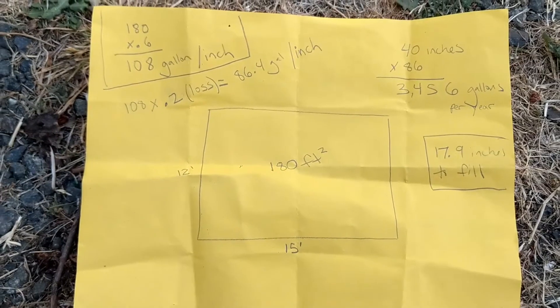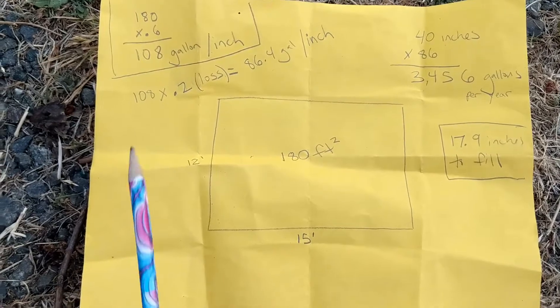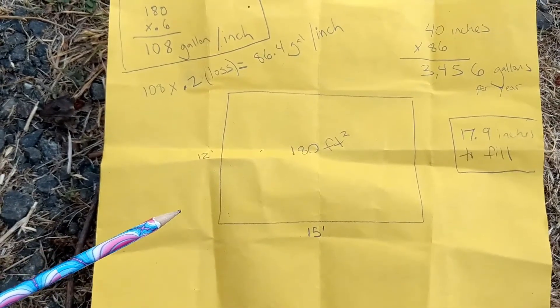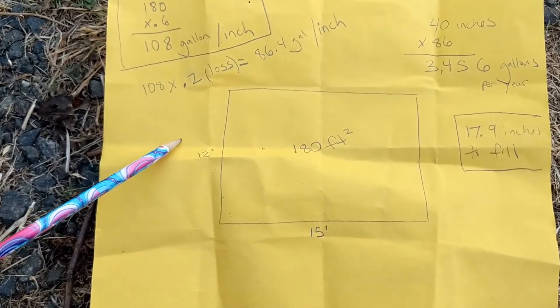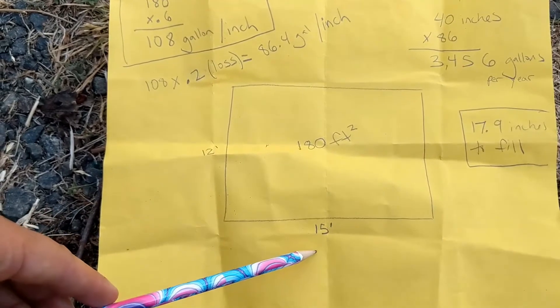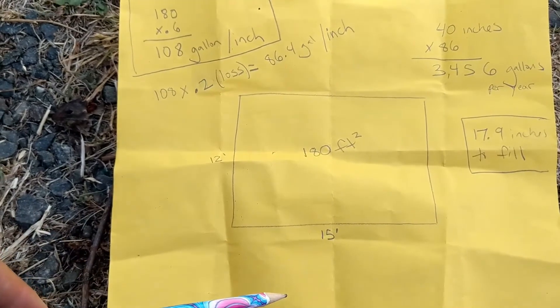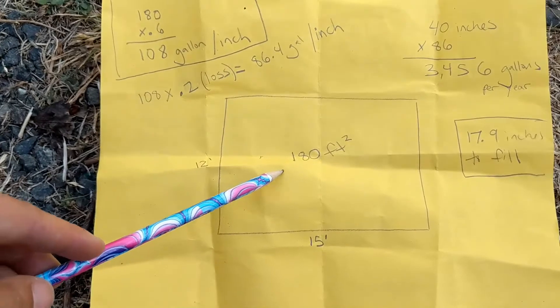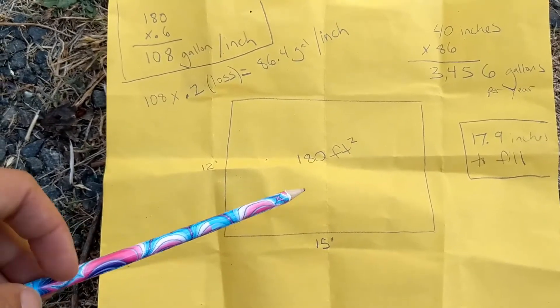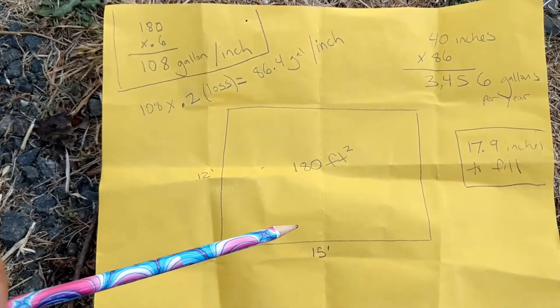The first thing we did was measure the roof. Lo primero que hicimos fue tomar las medidas del techo. So it was 12 feet by 15 feet. Fueron 12 pies por 15 pies. We multiplied and got 180 square feet. Y obtuvimos 180 pies cuadrados.